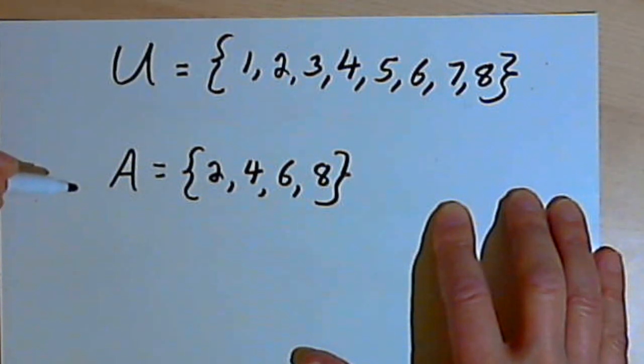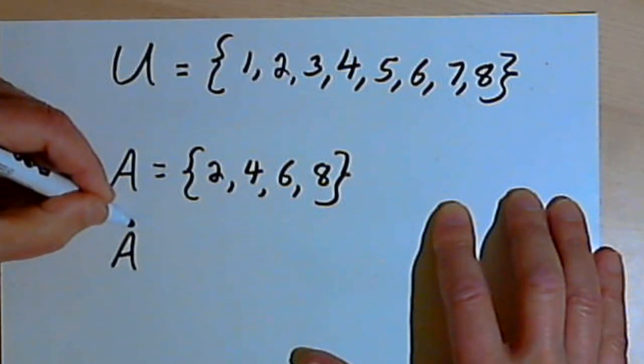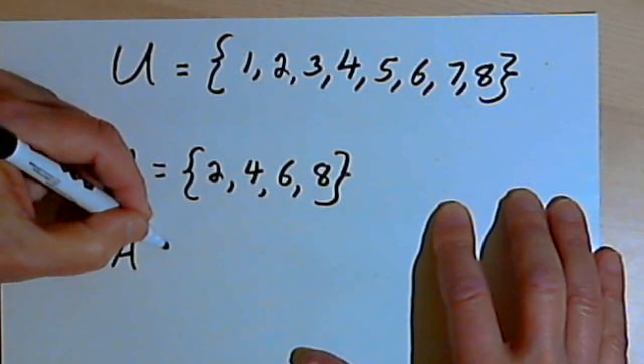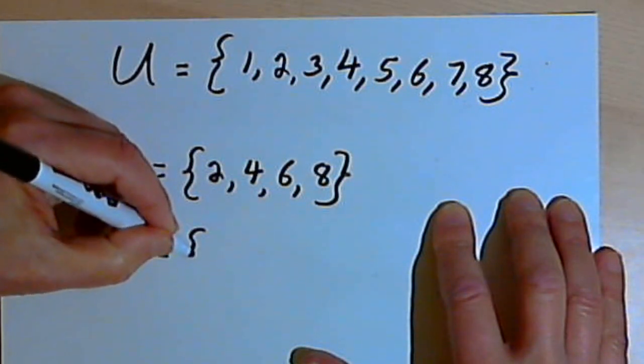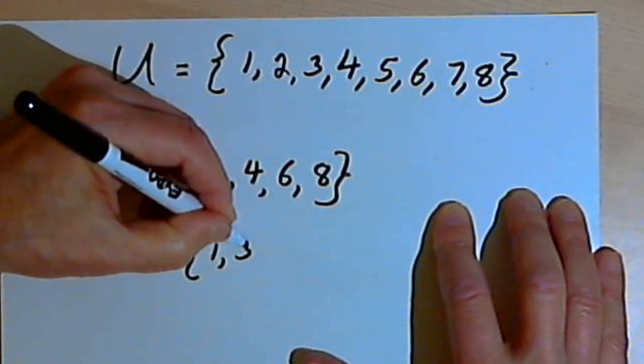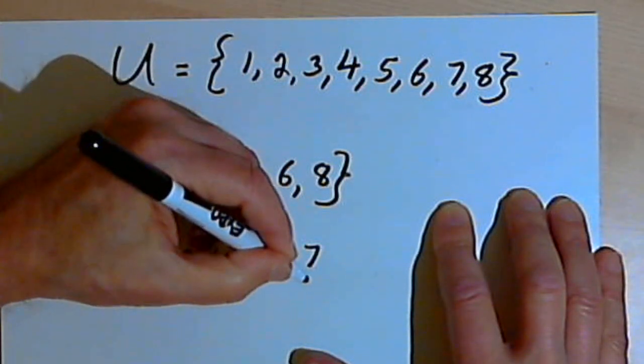And then if I want to talk about the odd numbers, all I have to do is call that the complement of A. If I want to fill in the set, it's going to be the numbers 1, 3, 5, and 7.